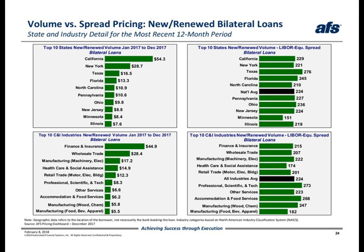Moving to the bottom left chart, we can see that the finance and insurance and wholesale trade sectors far outpaced the other industries. While balances for both of these sectors grew at a high rate in 2017, spread pricing was below the all industry average of 224 basis points. Across the top ten industries, healthcare has the lowest average spread at 174 basis points, which is mainly due to low pricing seen for hospital loans. We also see accommodation and food services with one of the highest average spreads at 268 basis points, and we saw high spreads across all subsectors within this industry, especially in the traveler accommodation subsector, with a spread of 275 basis points.